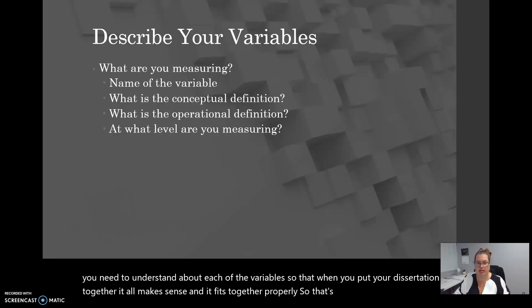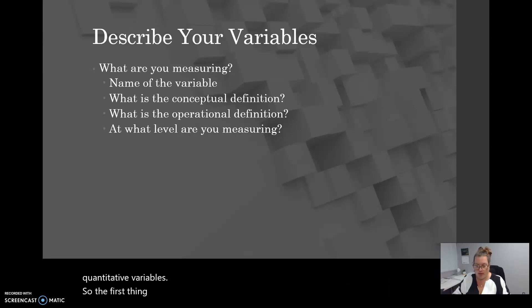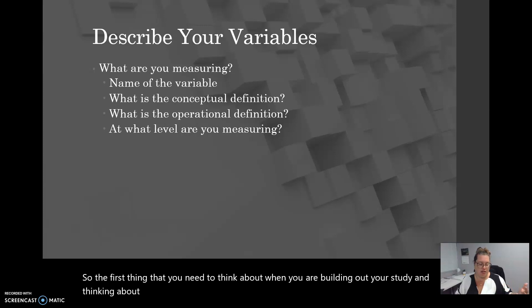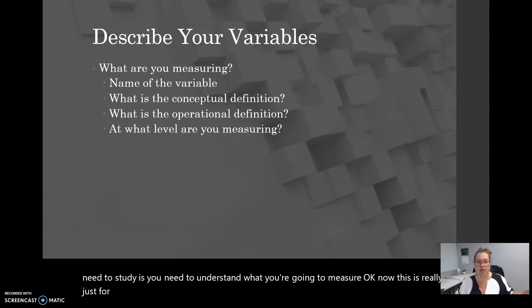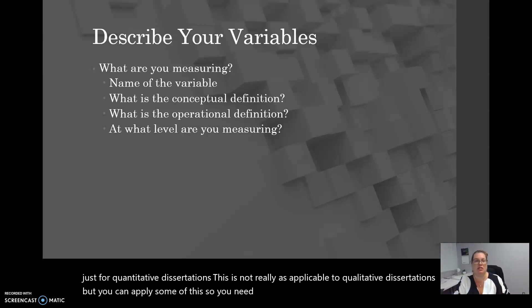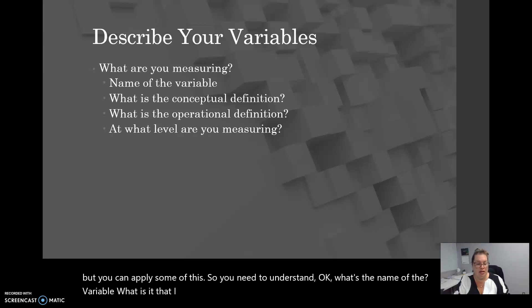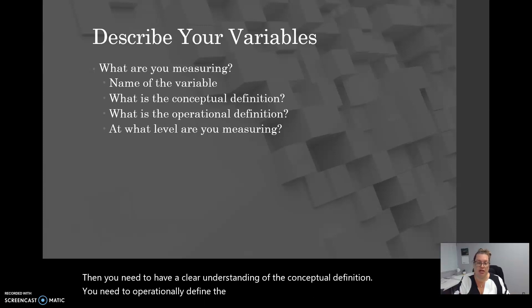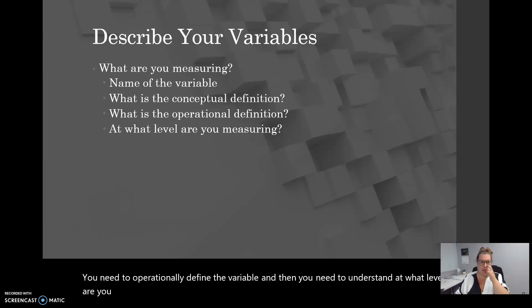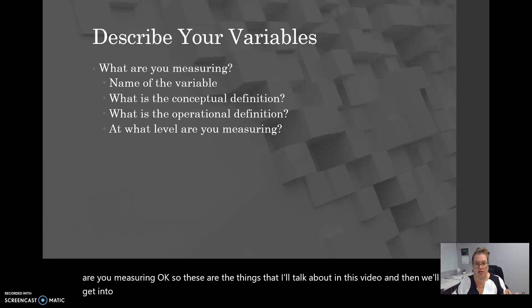That's why I want to talk about quantitative variables. The first thing you need to think about when building out your study is understanding what you're going to measure. This is really just for quantitative dissertations, though you can apply some of this to qualitative as well. You need to understand: what's the name of the variable, what is it that you are measuring, you need a clear conceptual definition, you need to operationally define the variable, and you need to understand at what level you are measuring. These are the things I'll cover in this video, and then we'll get into more in part two.